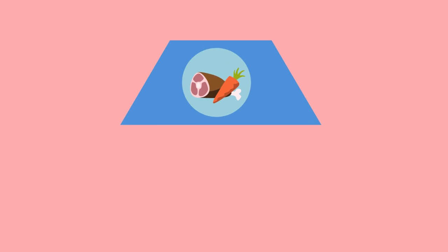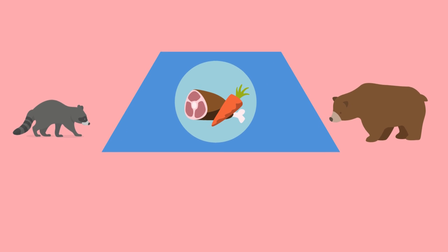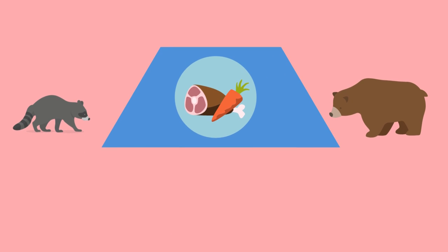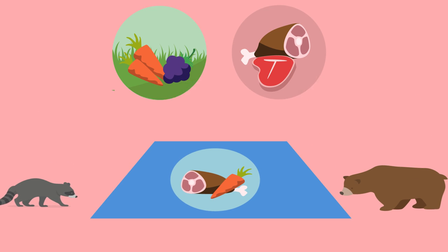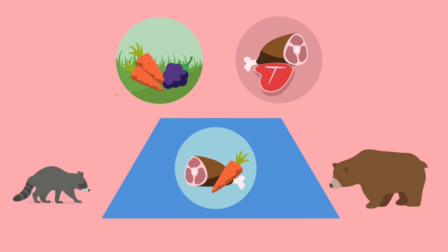Which trophic level do you think has the most direct interaction with other trophic levels? Pause the video and have a think! If you said the intermediate trophic level, or the one that contains omnivores, you're right! Omnivores tend to eat a much wider variety of organisms than either of the other two trophic levels. This variety in their diets leads to them having more direct interactions than other trophic levels.